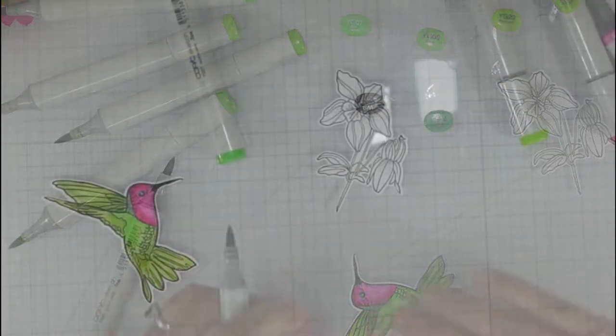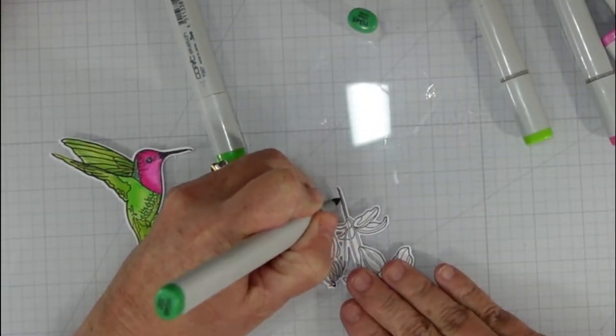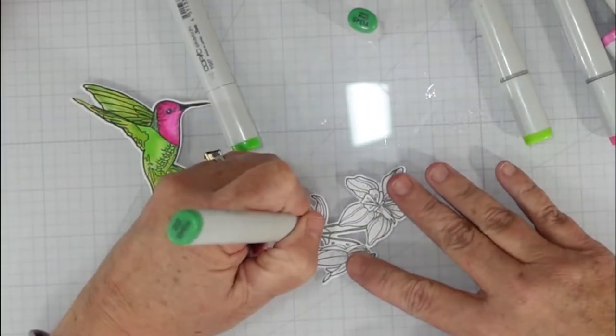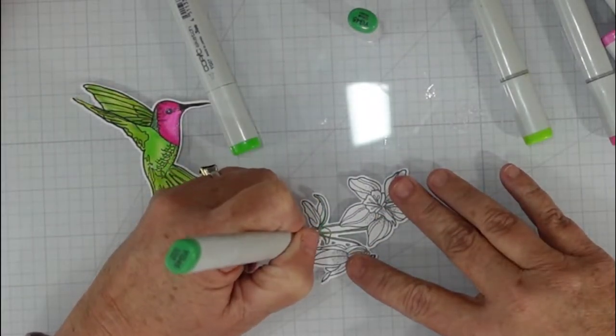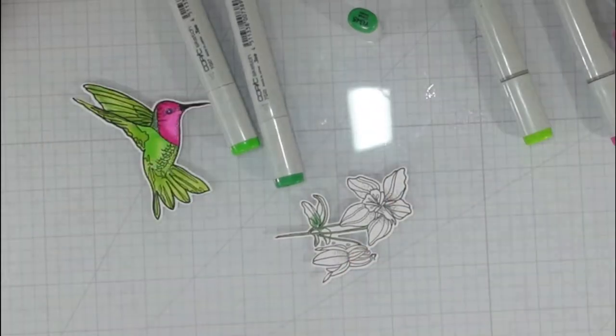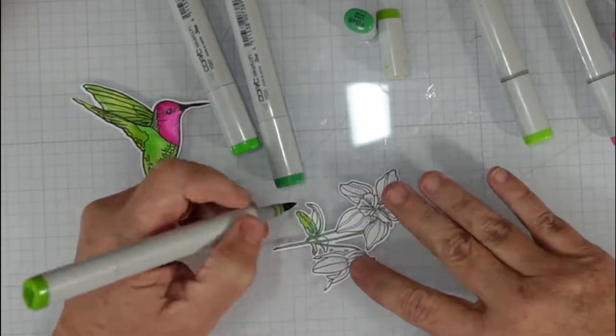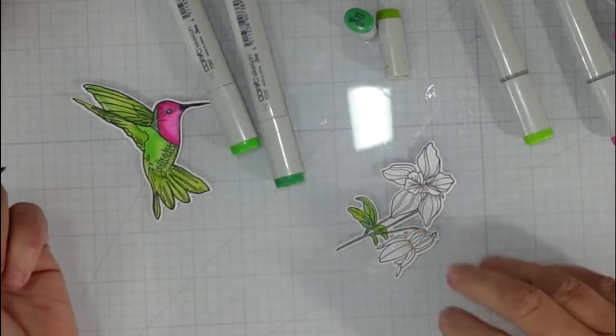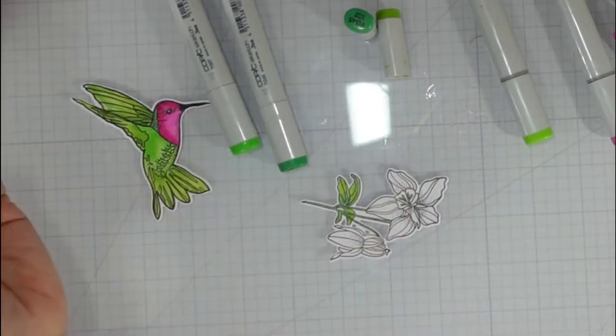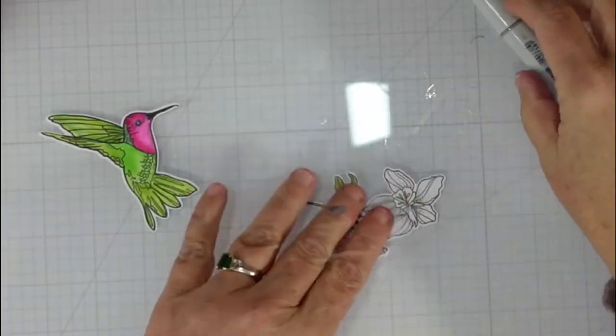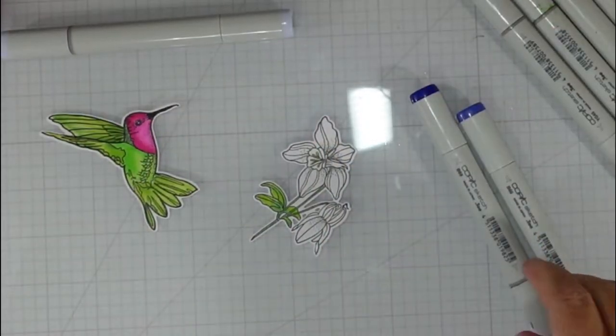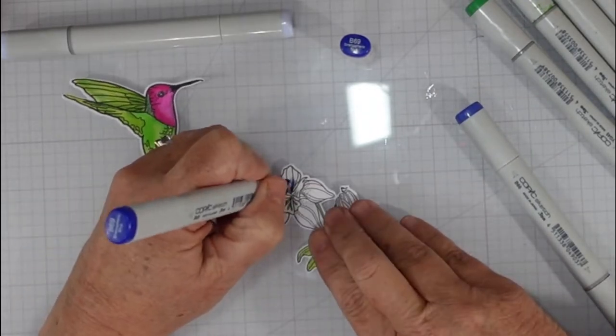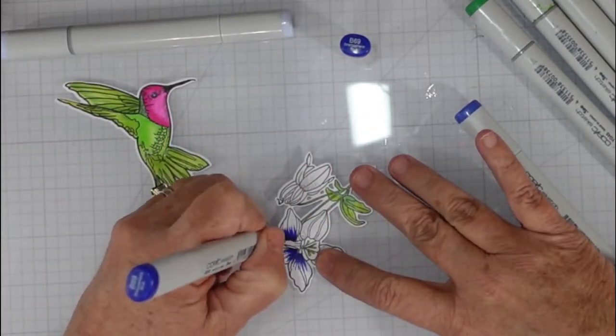We're going to color the beak with a W9, and then we're going to move on to our floral. Because the stems are so very thin, I used the YG45 on the stem. You can see that I did do a little bit of a flicking motion on the leaves with that YG45, and then I added a YG25 over the top of that.